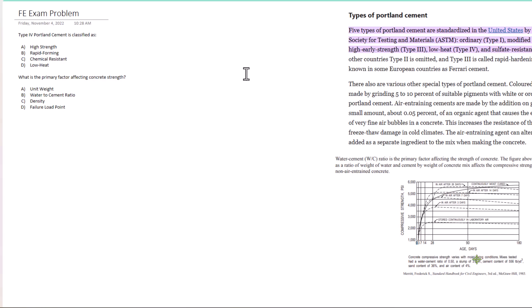The first problem: Type 4 Portland cement is classified as high strength, rapid forming, chemical resistant, or low heat. We have to determine which one is correct.